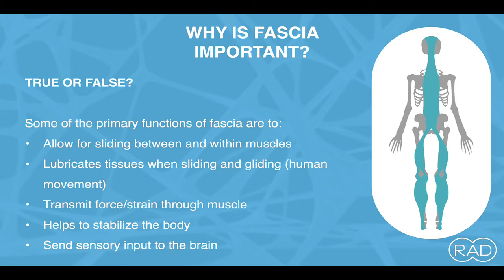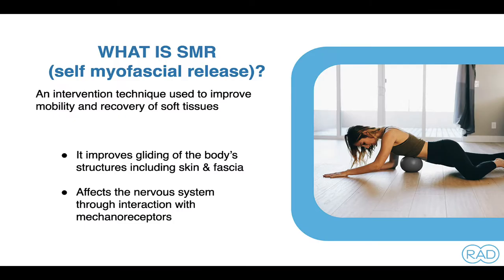This line is also connected to other fascial lines like the spiral line or the arm line and more. I can't emphasize enough — it's all connected, and every myofascial line, every part of the body, impacts another. So now that we know what fascia is, how can we describe self-myofascial release, aka SMR?